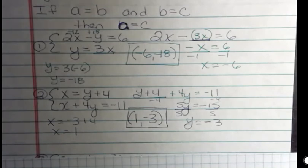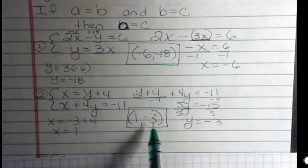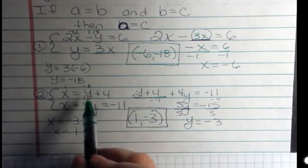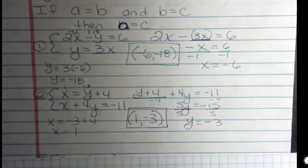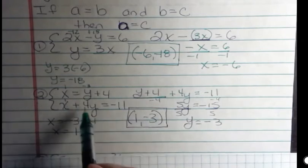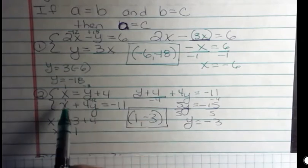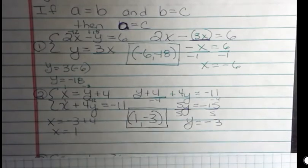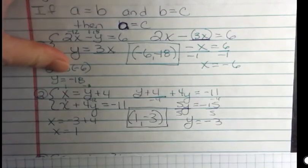Well, I should have checked really quick before I moved on. I know that if x is 1 and y is negative 3, negative 3 plus 4 is 1. That's true. And x is 1, and negative 3 times 4 is negative 12, and 1 plus negative 12 is negative 11. That's true as well. So I've checked both of those.